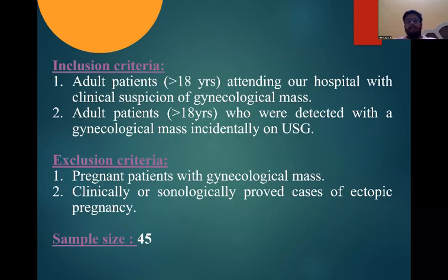Inclusion criteria: patients aged above 18 years attending our hospital with a clinical suspicion of gynecological masses, and patients detected with gynecological masses incidentally on ultrasonography. Exclusion criteria includes pregnant patients with masses or clinically or sonologically confirmed cases of ectopic pregnancy. The sample size is 45 patients.